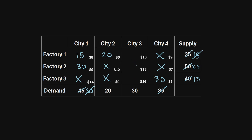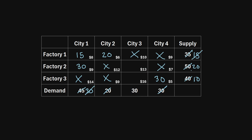Looking at the remaining cells, factory one's supply is exhausted, so we skip its cell. The remaining cells show shipping costs of $13 and $16. The minimum is $13, corresponding to city three, which has a demand of 30. Factory two has 20 units left, so we send all 20 units, reducing city three's demand to 10. In the final cell, factory three's remaining supply of 10 exactly meets city three's remaining demand of 10, so we assign those 10 units, completing the allocation.